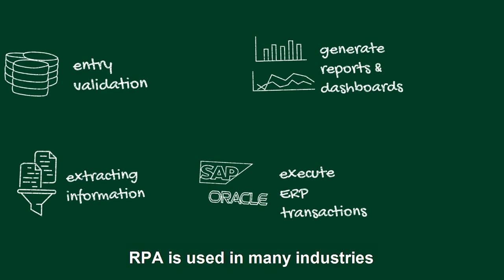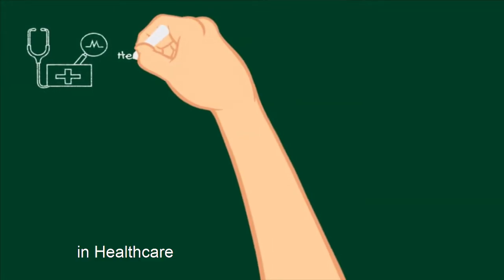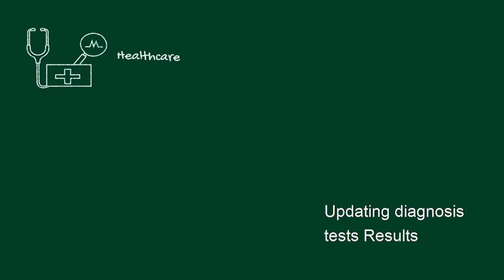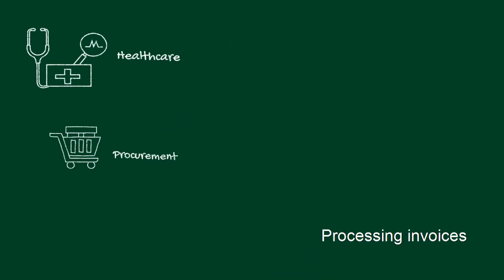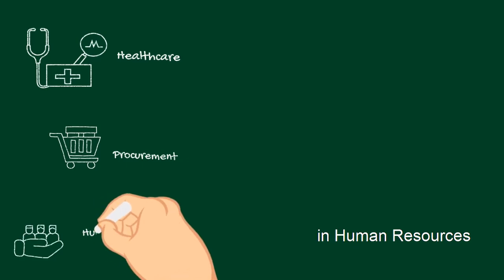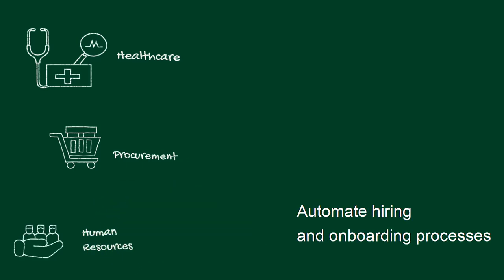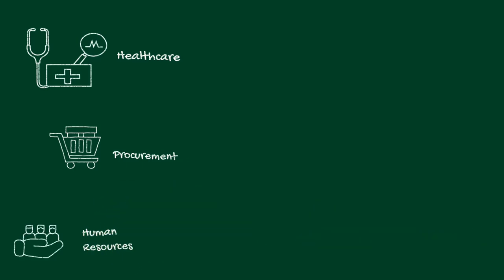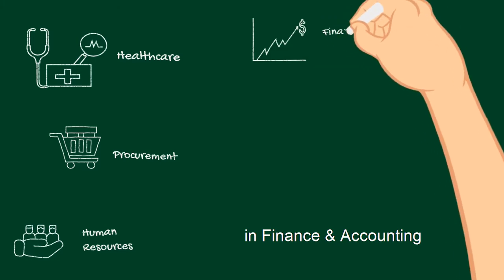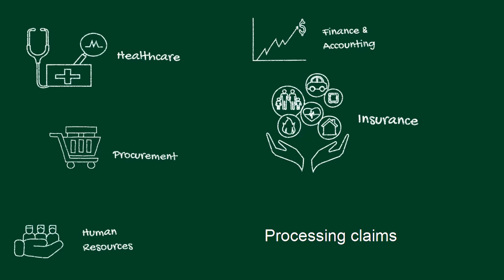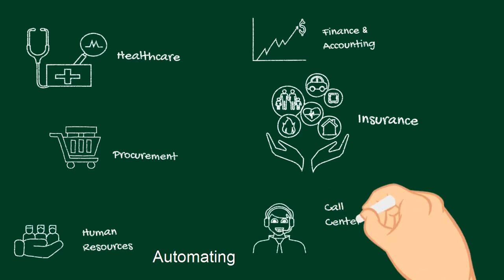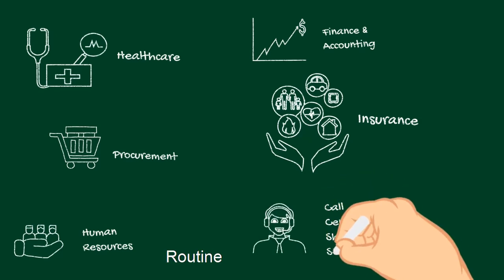RPA is used in many industries. Here are some examples: in healthcare, updating diagnosis and test results; in procurement, processing invoices; in human resources, automating hiring and onboarding processes; in finance and accounting, preparing financial statements; in insurance, processing claims; and in call centers, automating routine diagnosis.